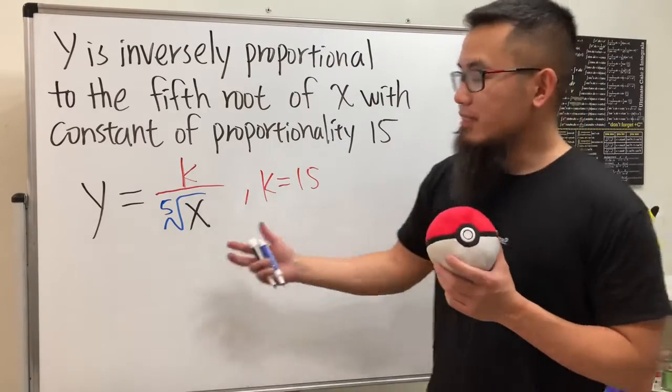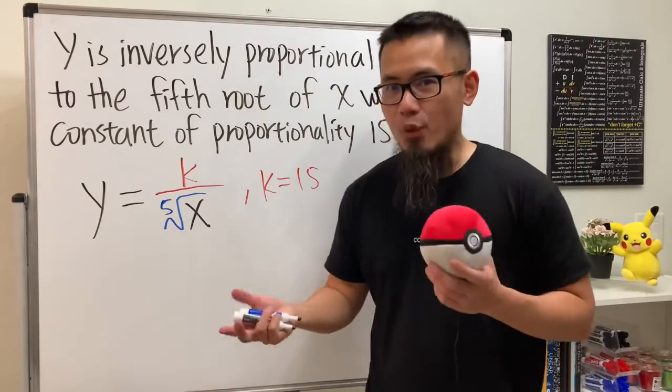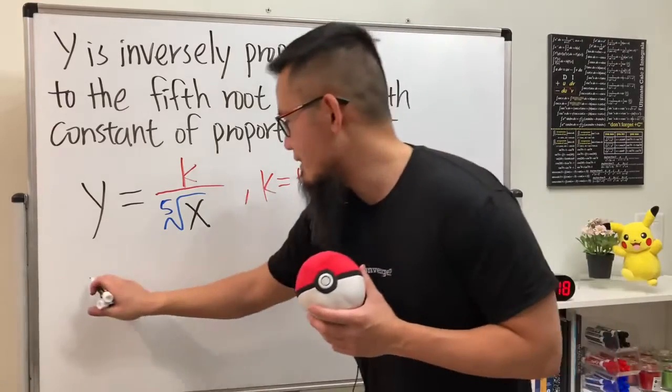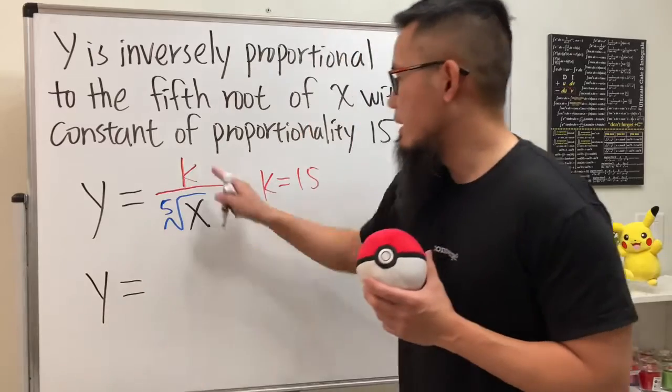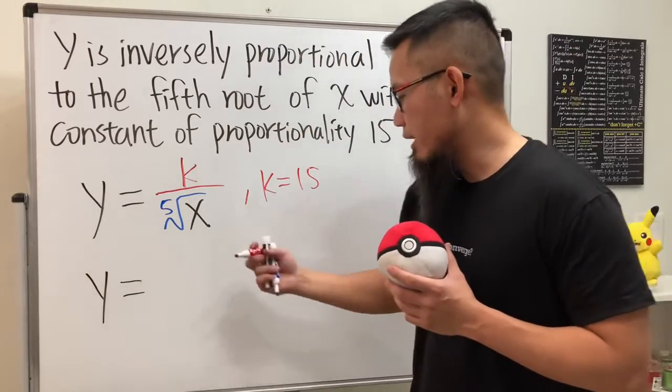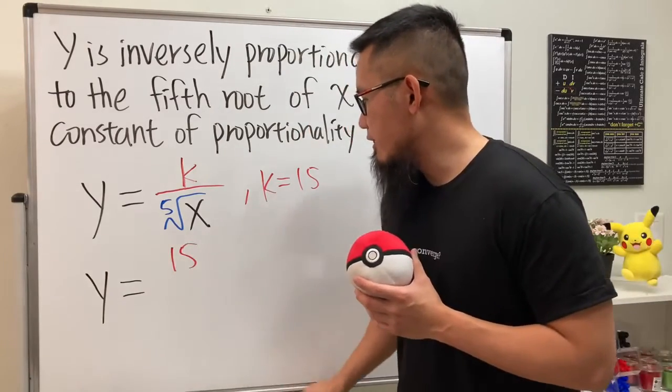And the answer choices actually put this into the exponent form, right? So we're just going to write this as: y equals k is 15, so let's put that down right here real quick, and then divide it by...